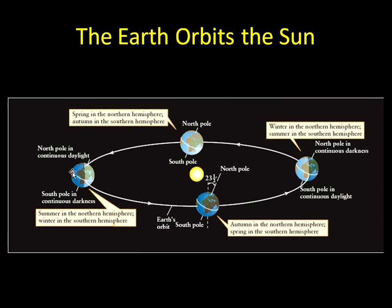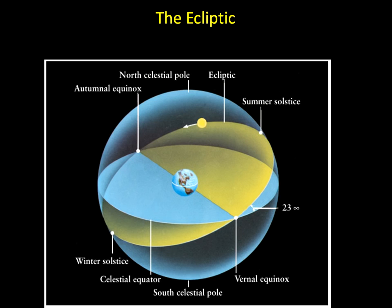As the Earth moves around the sun — as it orbits the sun — the apparent location of the sun as it lines up with the celestial sphere means the sun appears to move around in a circle throughout the year. And that path that the sun takes is called the ecliptic.